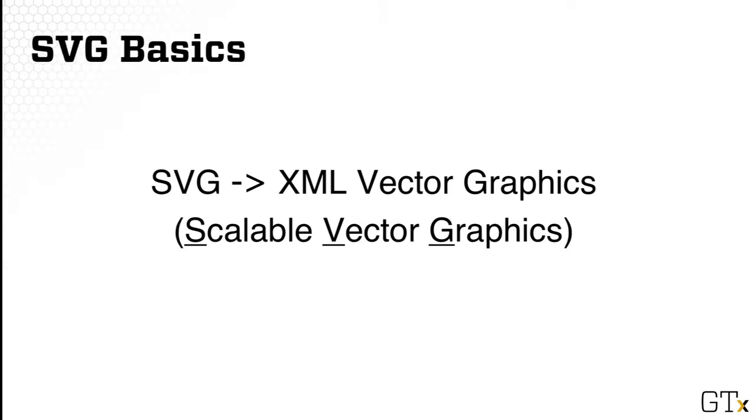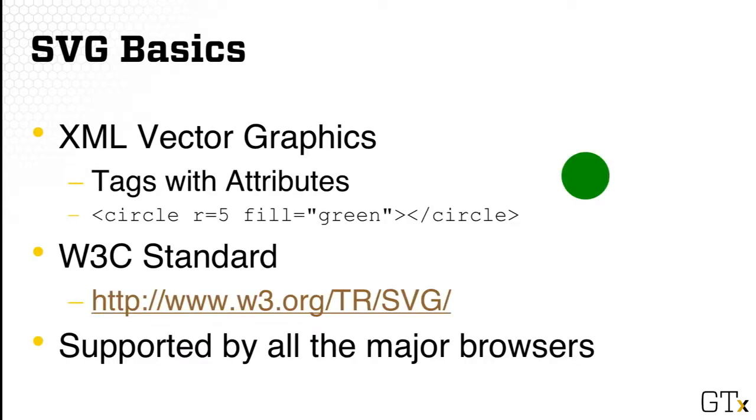SVG stands for Scalable Vector Graphics, and it's actually an XML document. That also means you're essentially writing a markup, and by parsing those markup, you're able to generate these graphics. For example, you can say, I want to create a circle. You can write out the line: circle r=5 fill=green. That means you want a circle with radius of 5 and using the fill color green. It's part of the W3C standard and supported by all three major browsers. For that reason, it's great to deliver your visualization in D3 because everyone can see it.